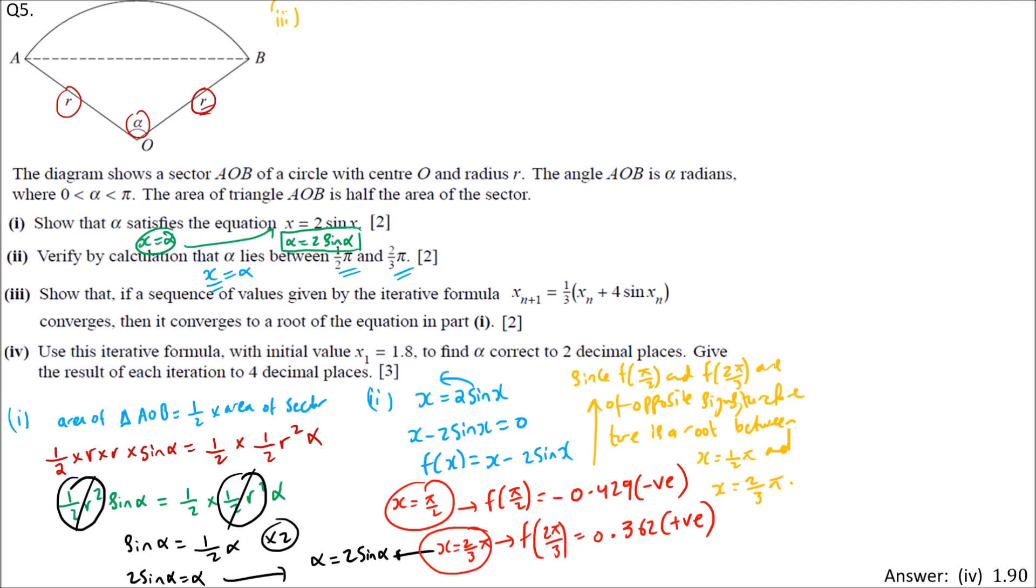Next, the third part. Show that if the sequence of values given by this iterative formula converges, it will converge to the equation in part 1. We take the iterative formula: x_{n+1} equals 1/3 times (x_n plus 4 sin x_n). Remove the subscripts: x equals 1/3 times (x plus 4 sin x). Multiply by 3.